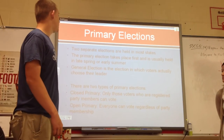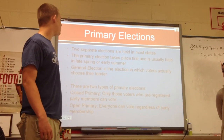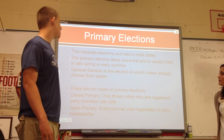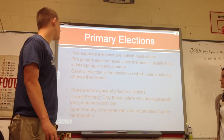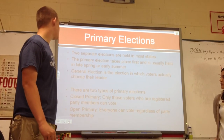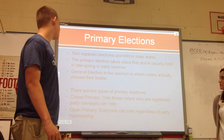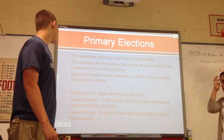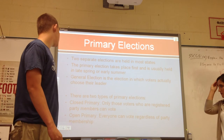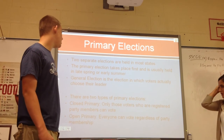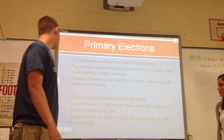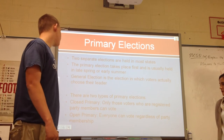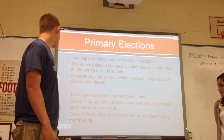Primary elections. Two separate elections are held in most states. The primary election takes place first and is usually held in late spring or early summer. General elections are the elections in which voters actually choose their leaders. There are two types of primary elections: a closed primary, in which only registered party members can vote, and an open primary, in which everyone can vote regardless of party membership.